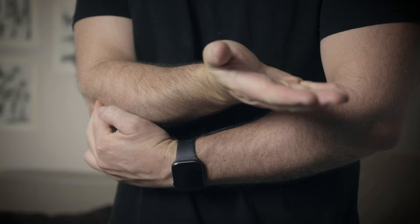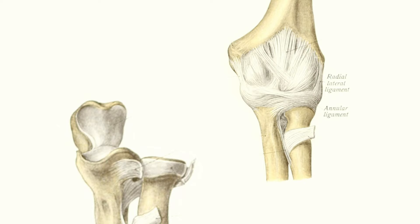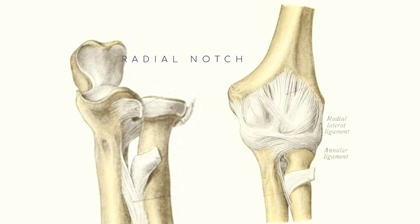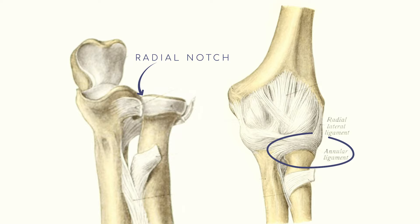By pronating and supinating your wrist, the radial head just pops up. That flared end of the radius sits in a little groove in the ulna and is held in place by a ligament called the annular ligament, which makes it a pivot joint. They form another joint at your wrist, which is also a pivot joint, but it's not as mobile.